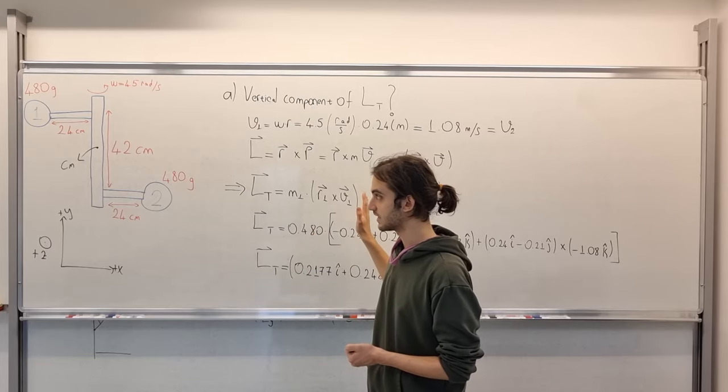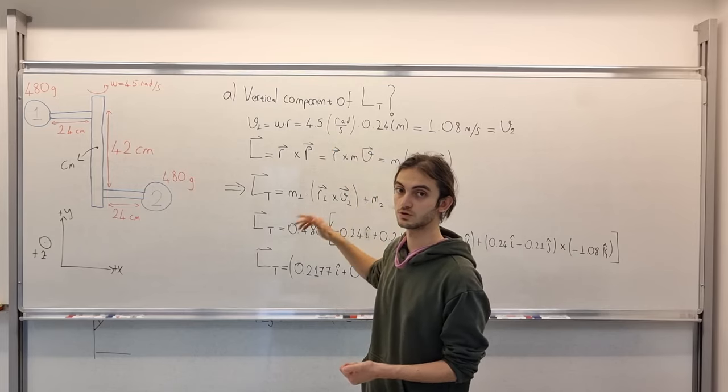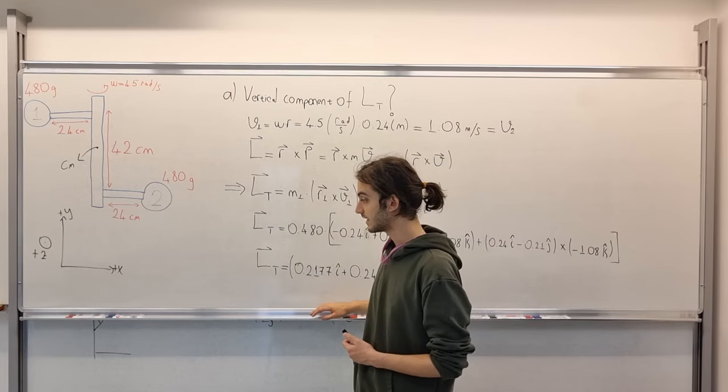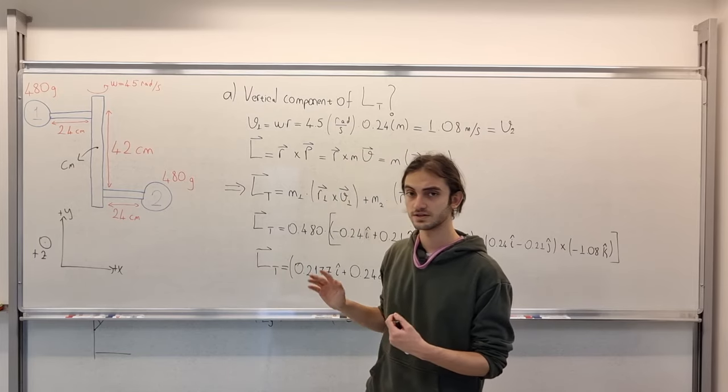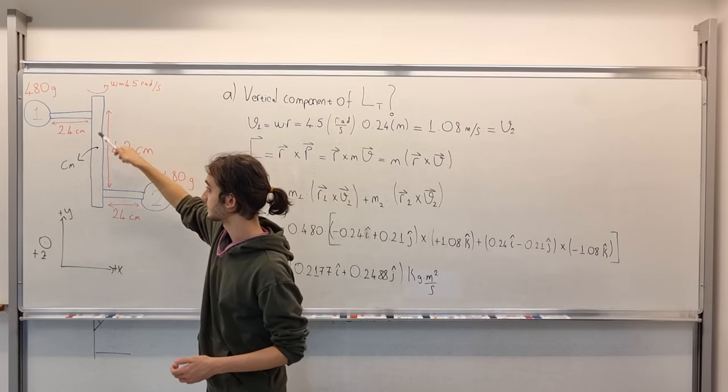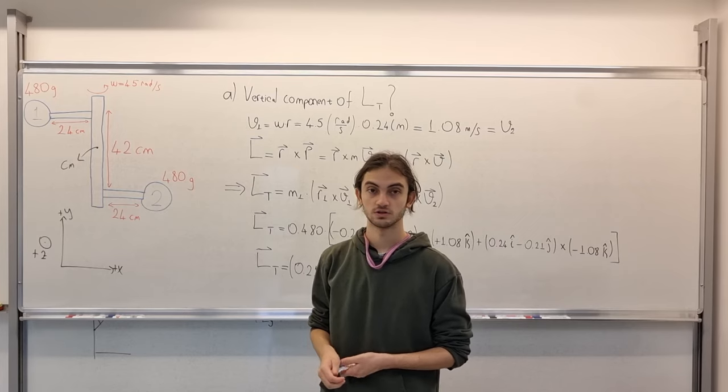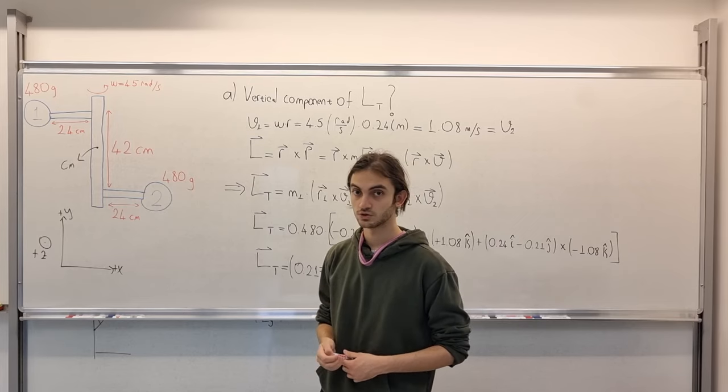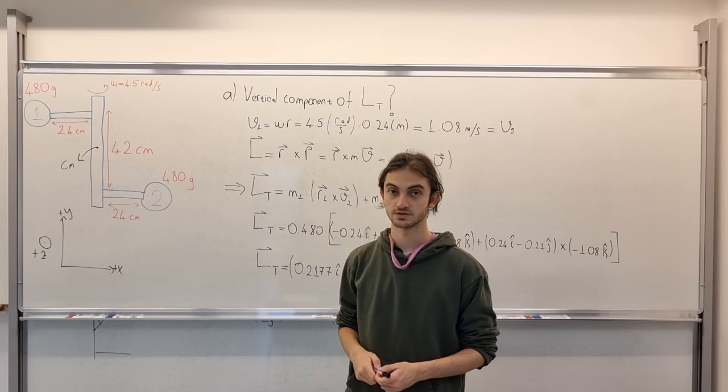So in option A of this question, we need to find the vertical component of total angular momentum. And in option B, we need to find the angle between the axle, which is this thing here, and the total angular momentum. So if you want to do this by yourself, you may stop the video now, I'll wait for a few seconds.